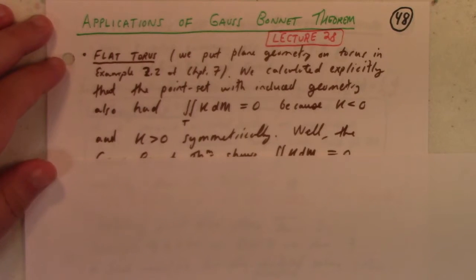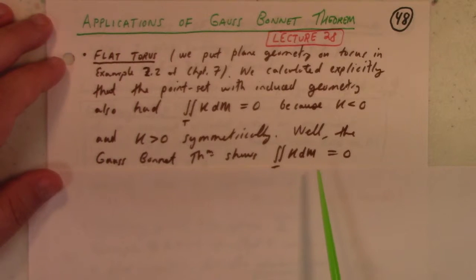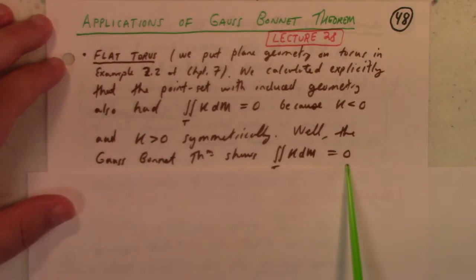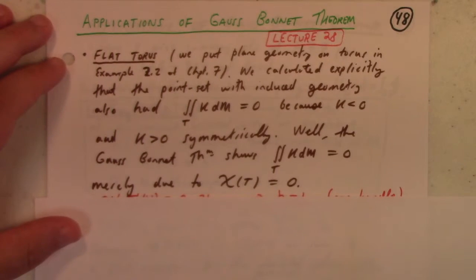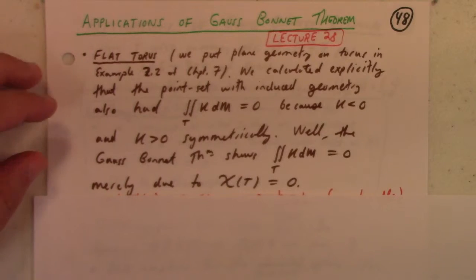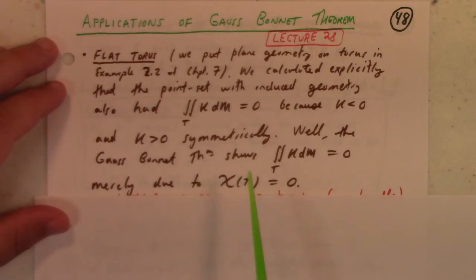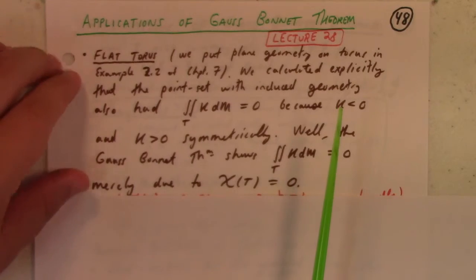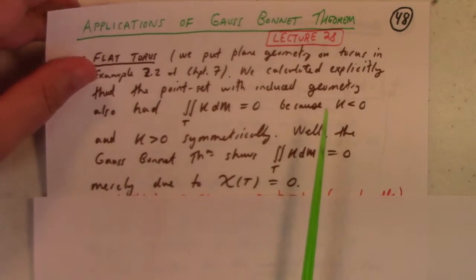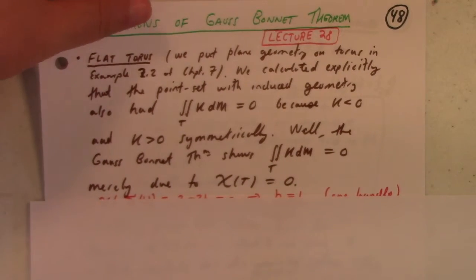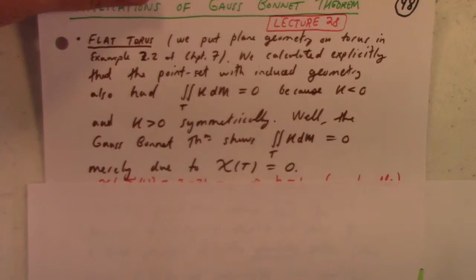On the flip side, you can show that the total curvature of the torus is zero because of its Euler characteristic. Total curvature of torus is 2π times Euler characteristic, which is zero. This is very labor-saving because it was actually a lot of work to work out this calculation explicitly.